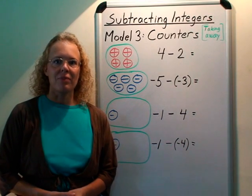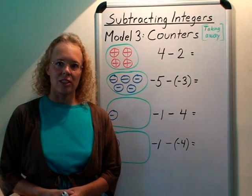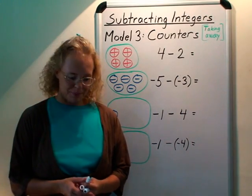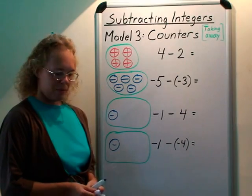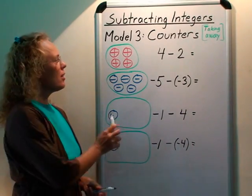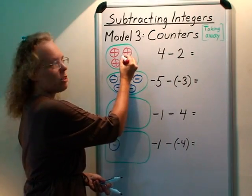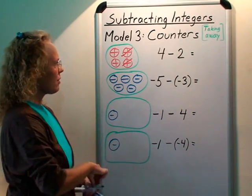The third and last model we are going to look at is that of counters. And here we are viewing subtraction as taking away. So students are surely familiar with that. In elementary school they learn subtraction as taking away. And so here you have 4 positives and take away 2 which means cross out 2. And what is left is 2.